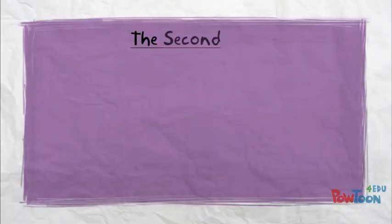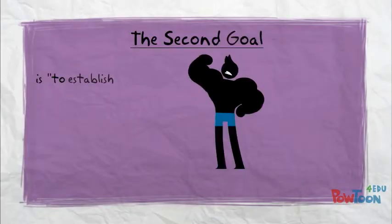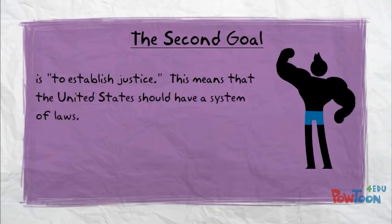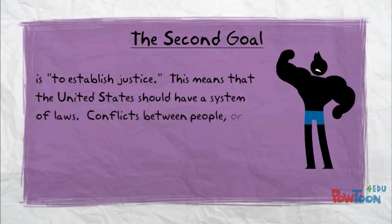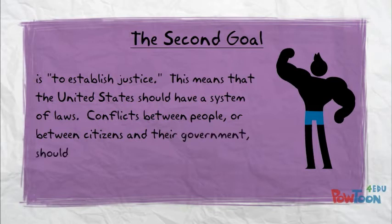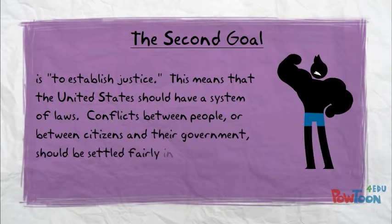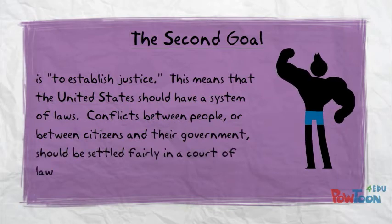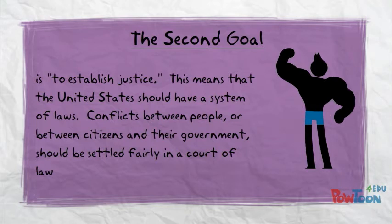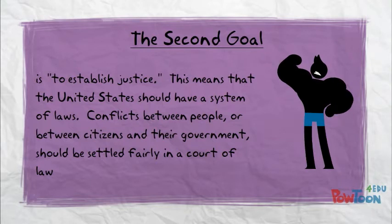The second goal is to establish justice. This means that the United States should have a system of laws. Conflict between the people, or between the citizens and their government, should be settled fairly in a court of law.